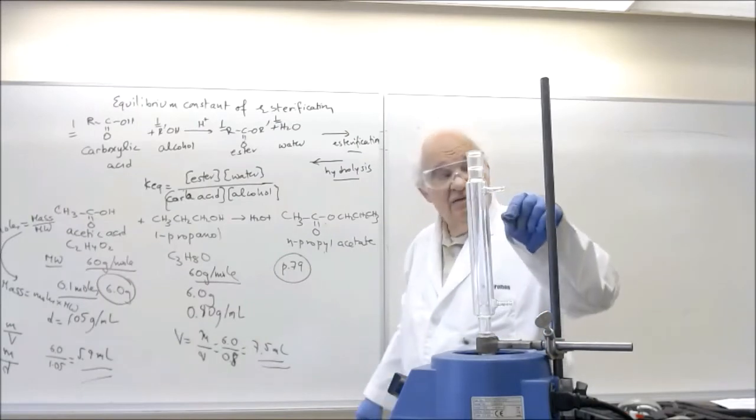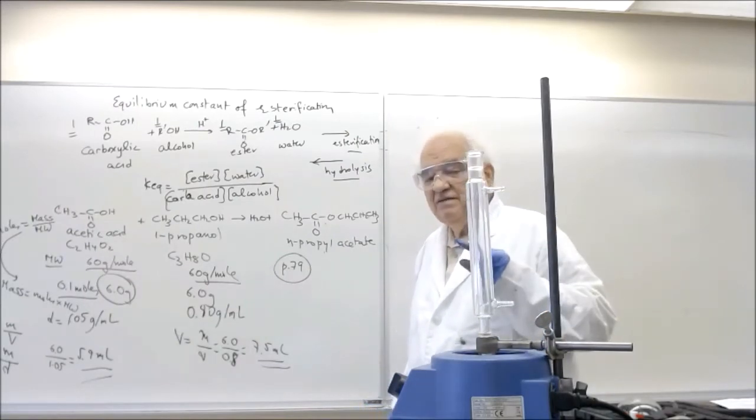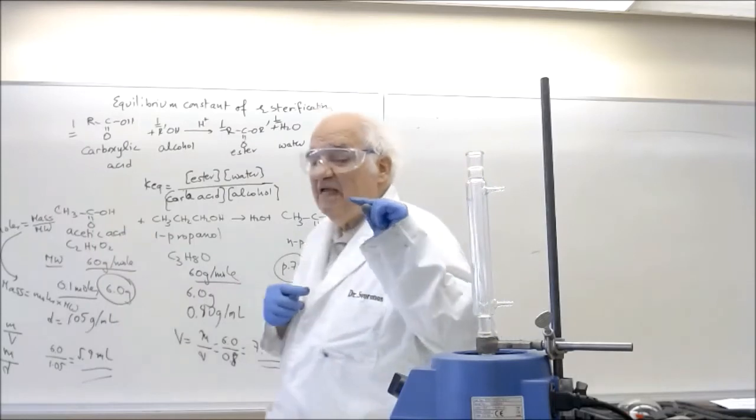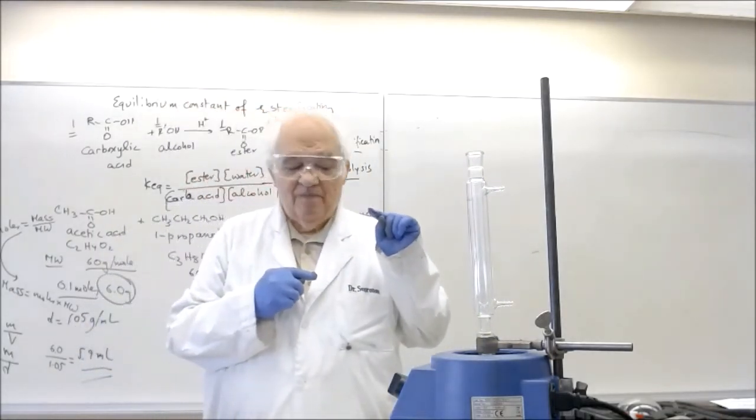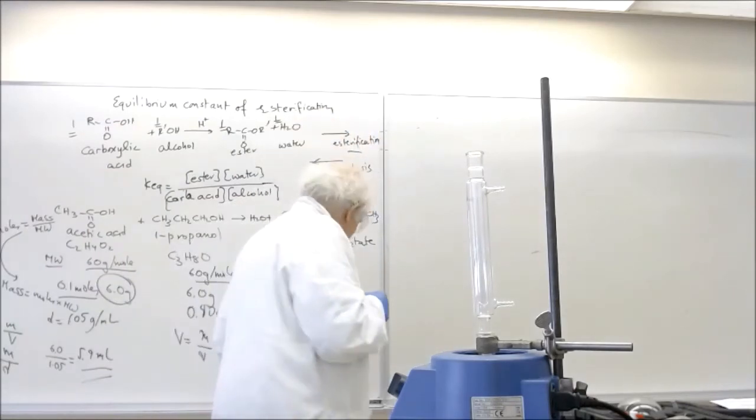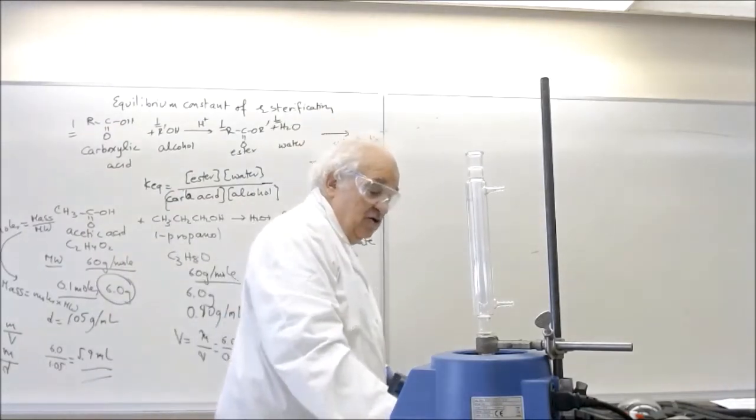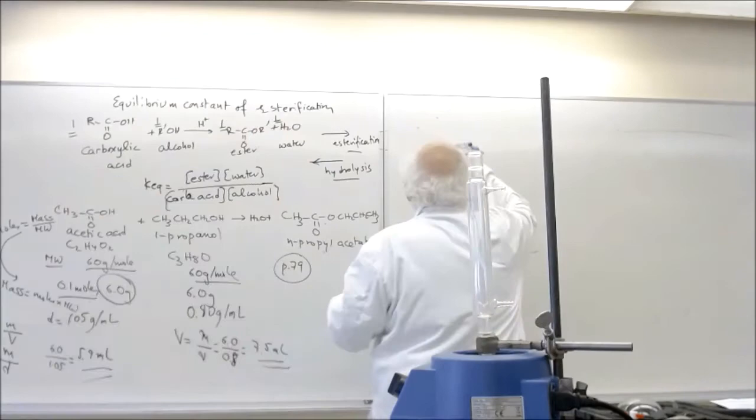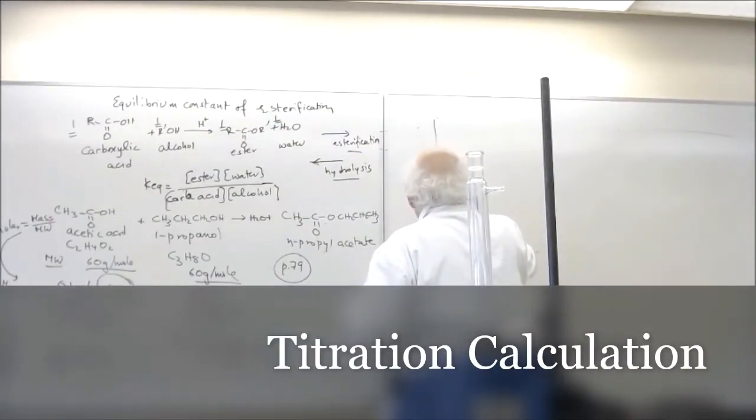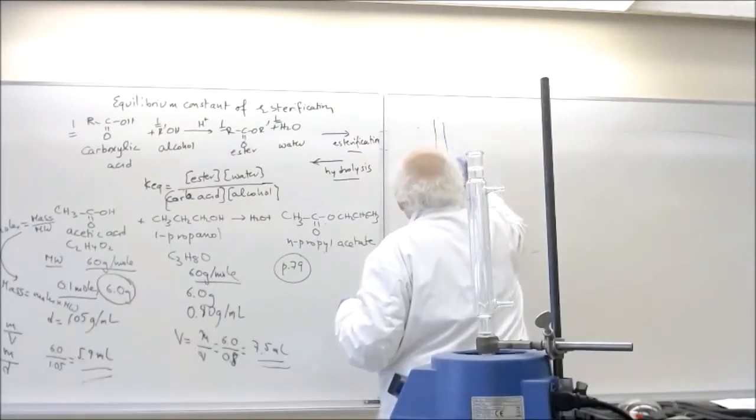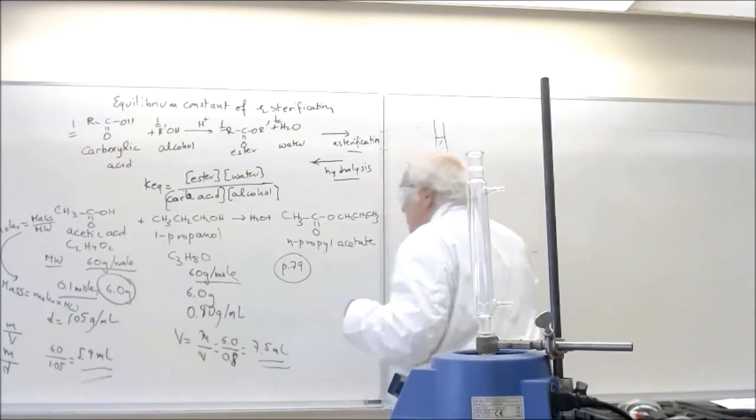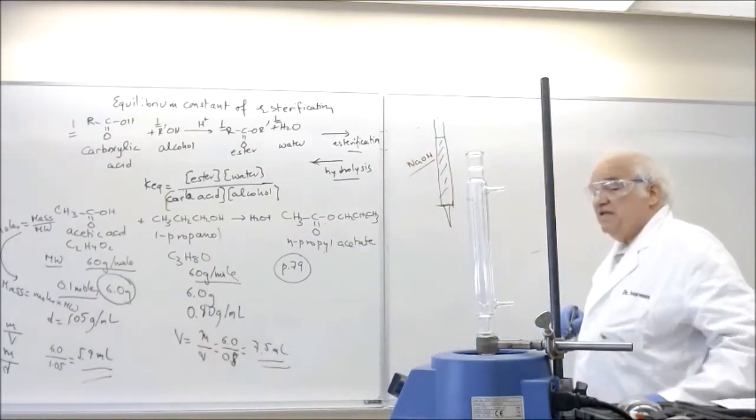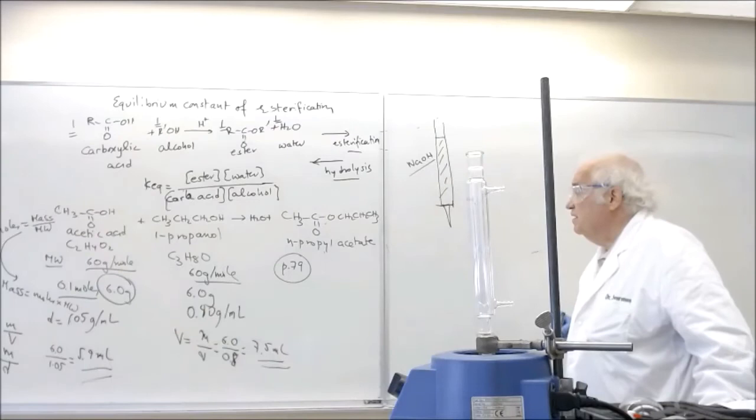And so therefore before we start refluxing, we'll take 1 milliliter using a pipette. A pipette now has to be calibrated. It's exactly 1.0 milliliter of that pipette. Okay, and then we will perform a titration. You've done titrations before. You will have the sodium ethoxide here. And they should be a standardized solution.